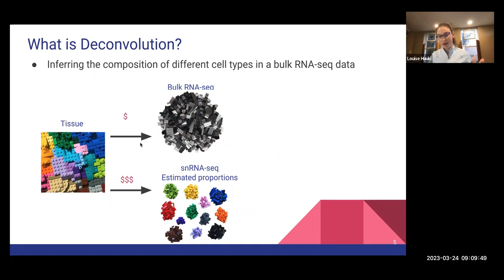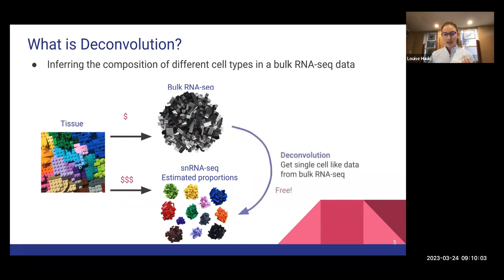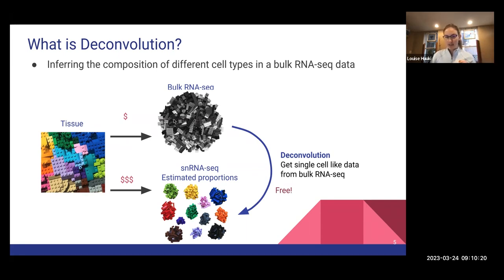Bulk RNA-seq is cheaper, we can do way more of it, and it's less computationally intensive, whereas single-cell is much more expensive and complicated to work with. Deconvolution helps us estimate the breakdown of cell types in a bulk RNA-seq sample without having to do single-cell RNA-seq - it's kind of like a freebie, a way to connect our bulk RNA-seq data to its cell type proportions. We accomplish this by using single-cell RNA-seq as a reference: we know the transcriptional profiles of the different cell types and use them to regress out what we think is in the bulk RNA-seq data.